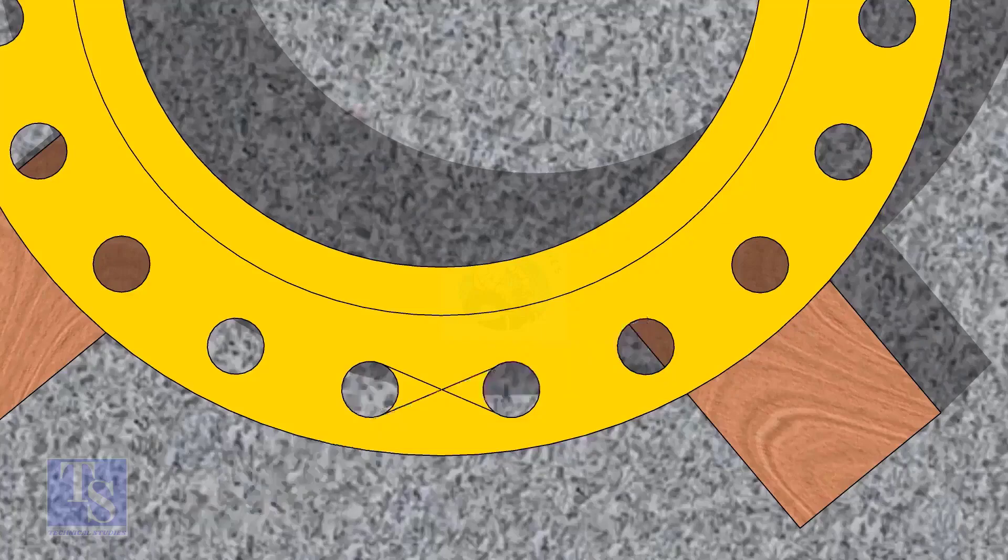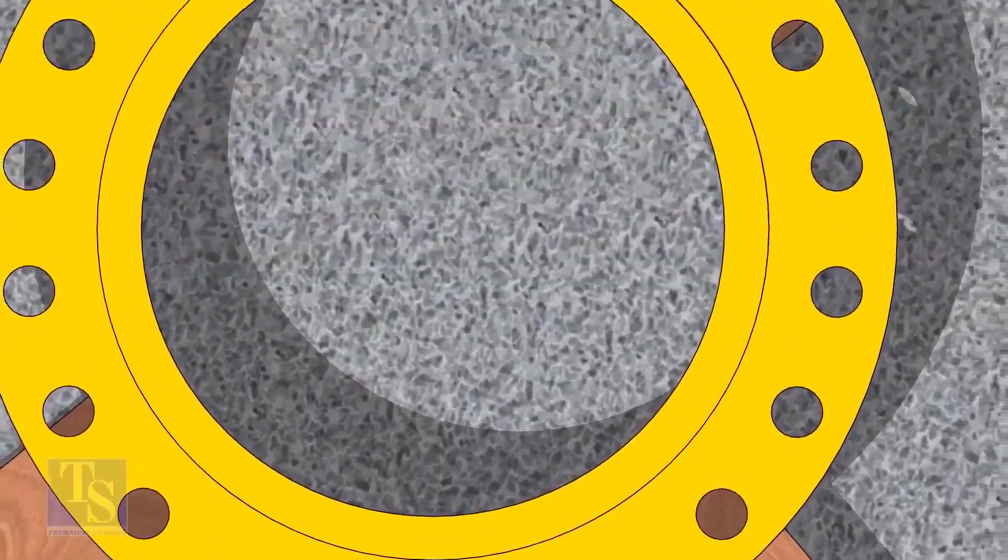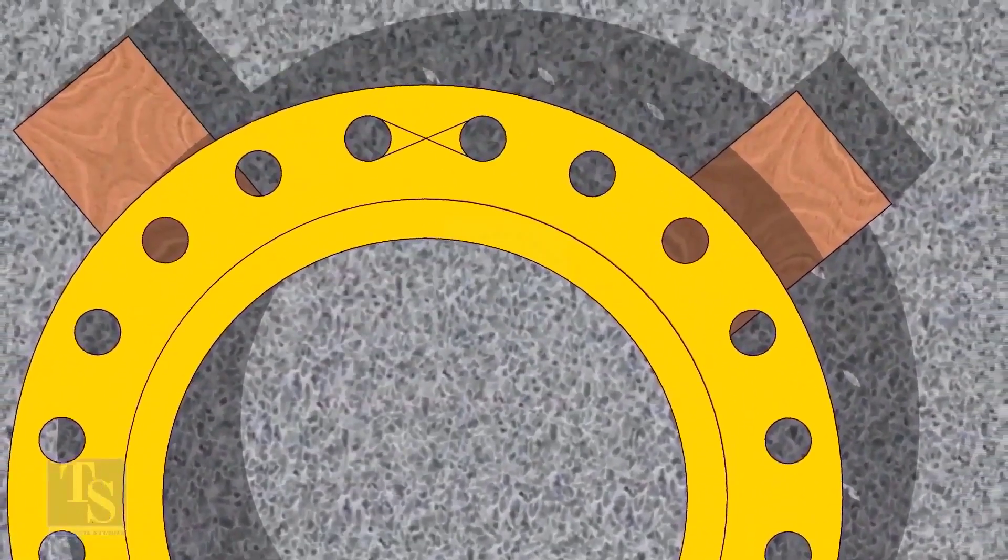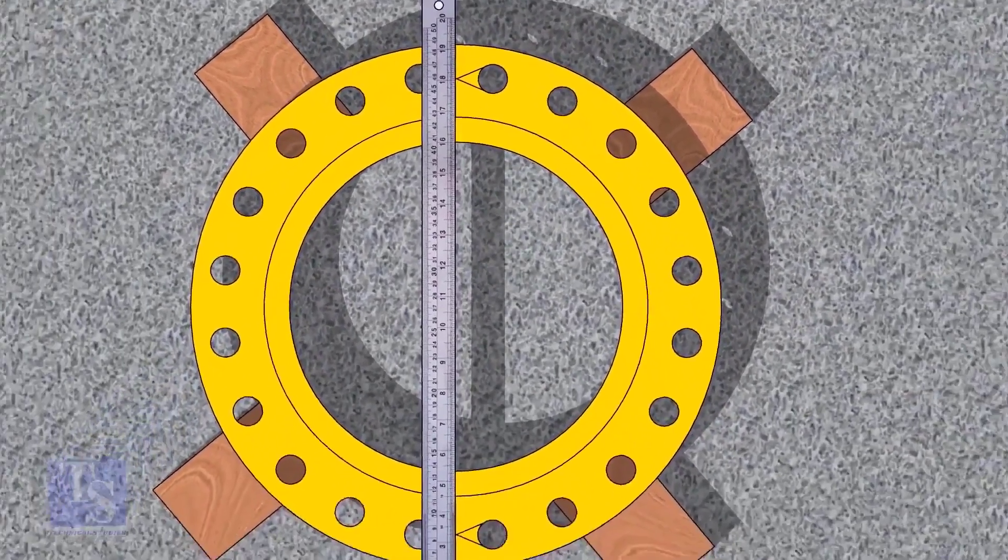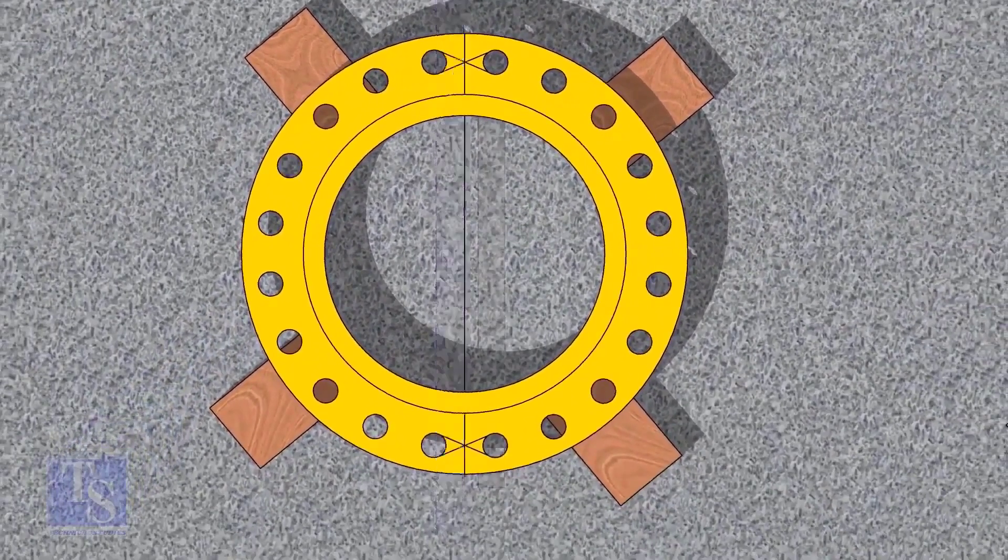Draw the center of the two holes on the opposite side. Draw the center line of the flange as shown.